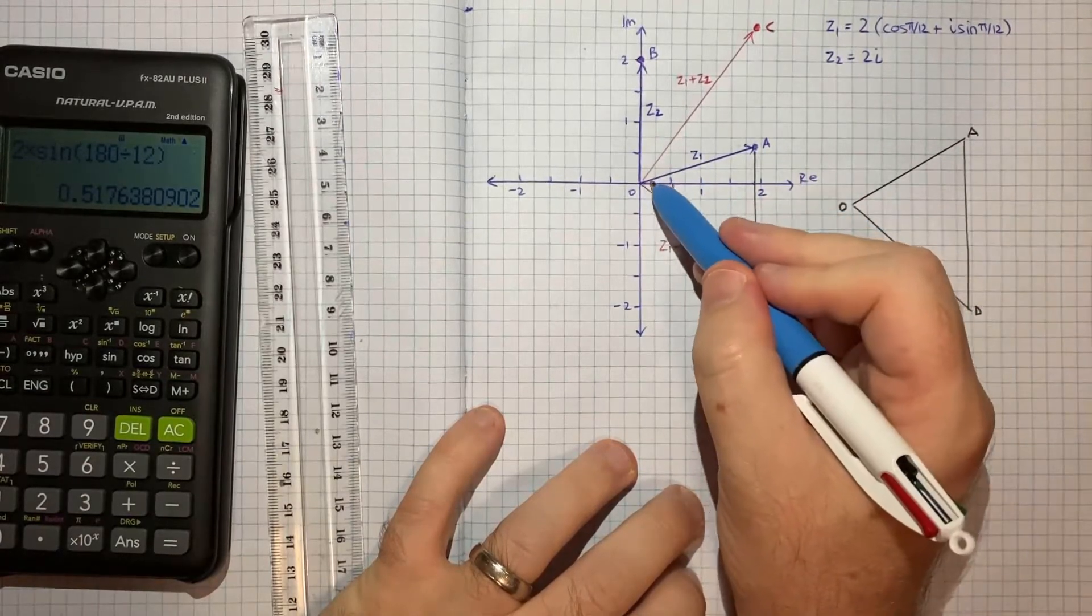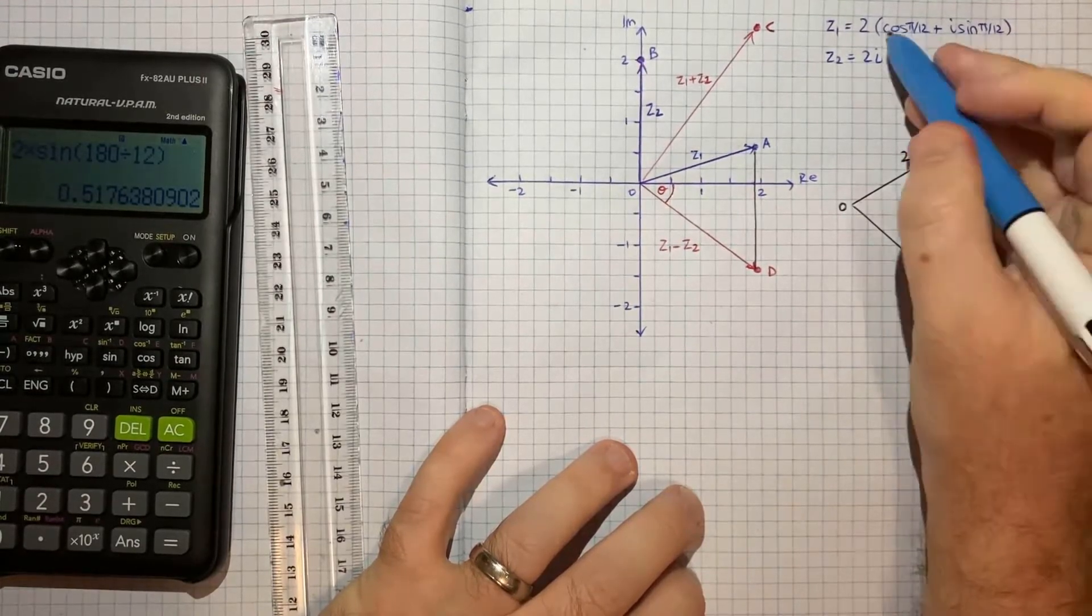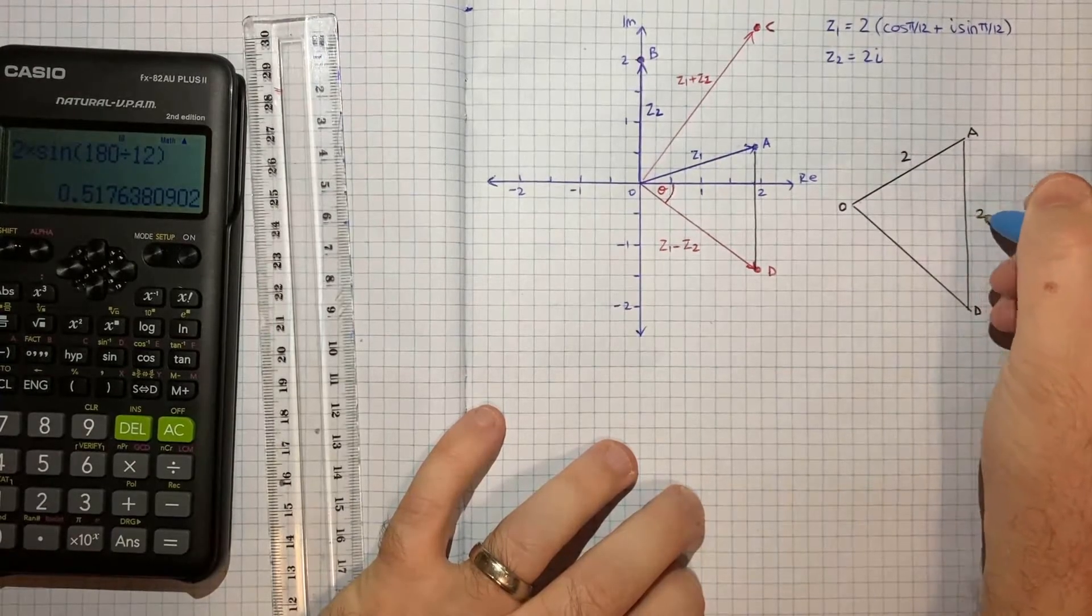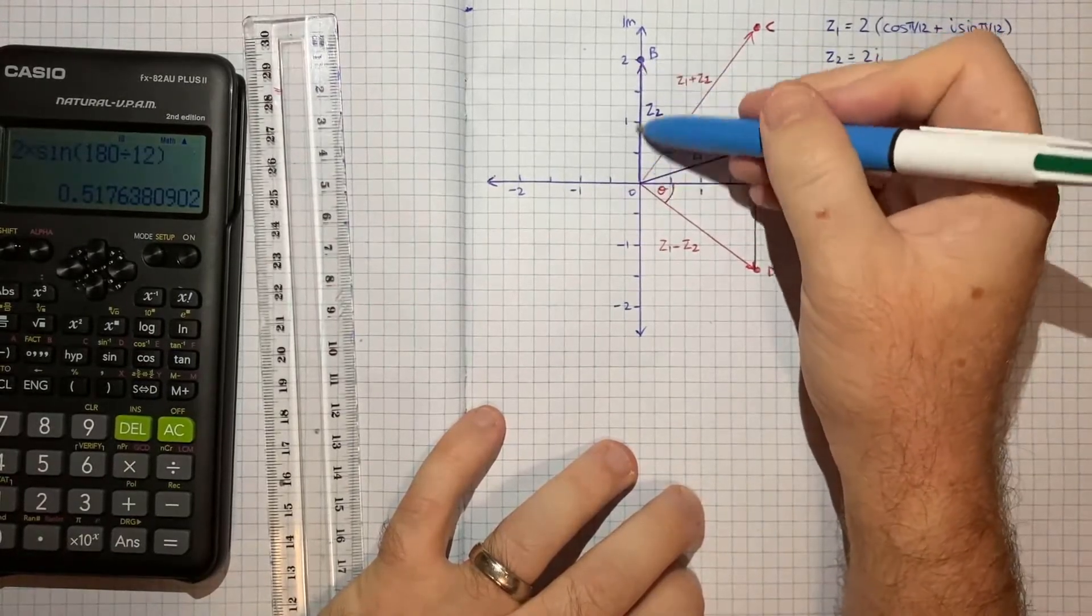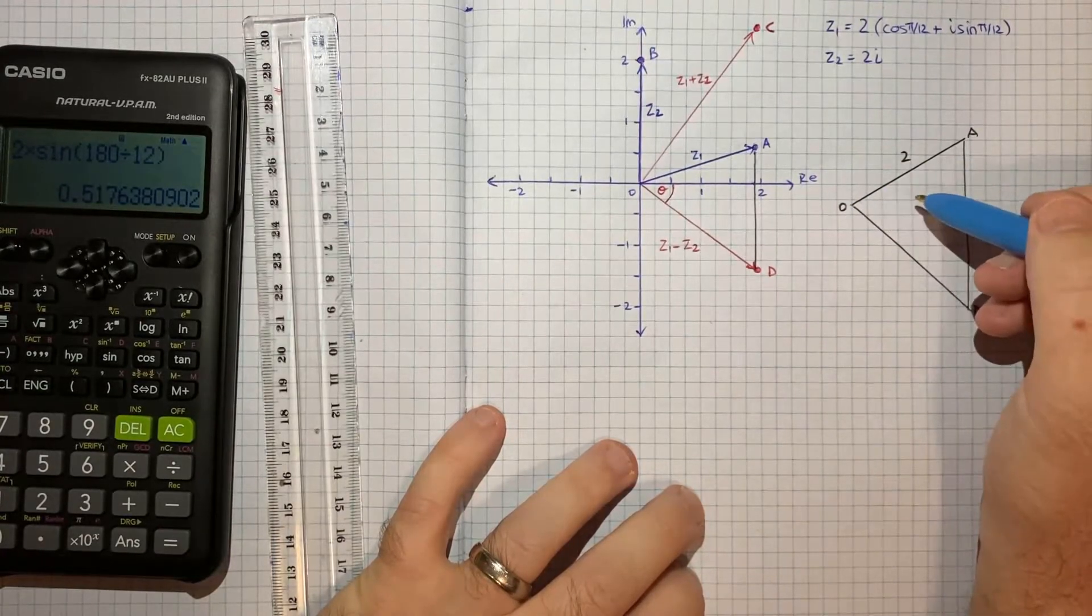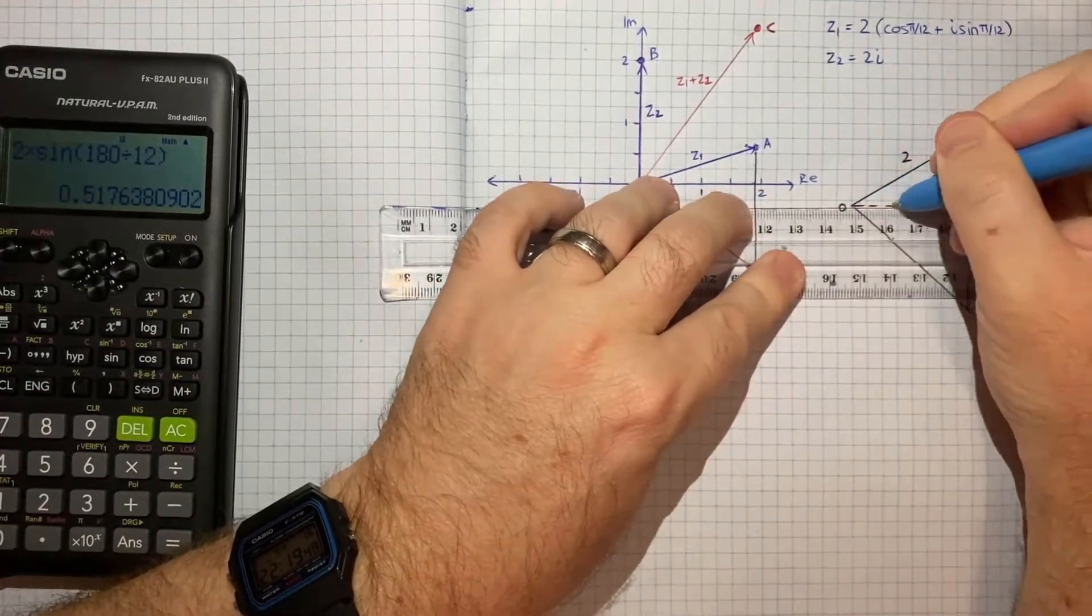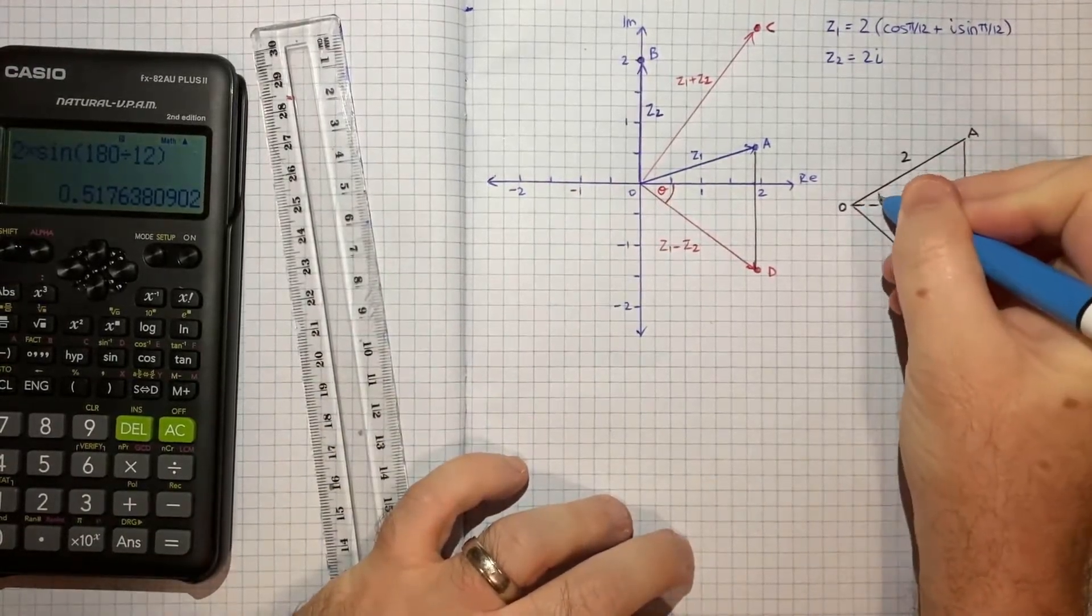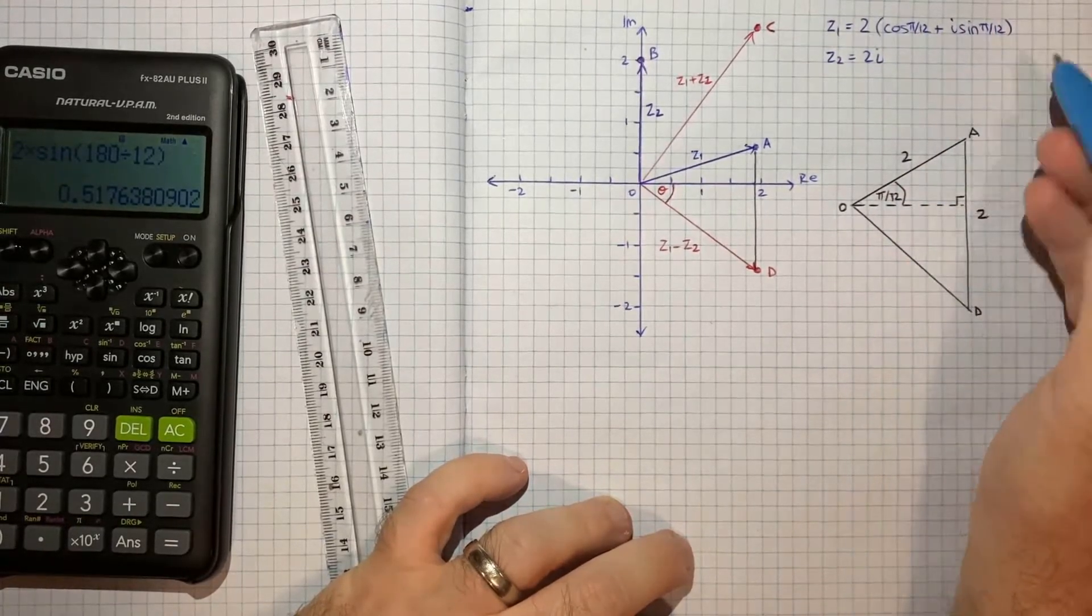We know that the magnitude from O to A is 2, because that's the modulus of that complex number. We had it in mod arg form. We also know that the magnitude from A to D is 2, because that's the magnitude of this complex number z2. So it's actually an isosceles triangle. And if I just annotate on this horizontal line,